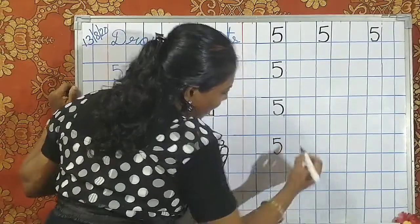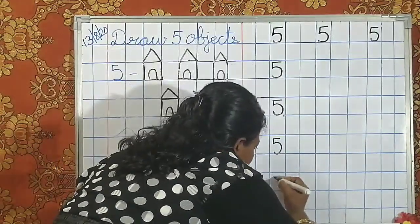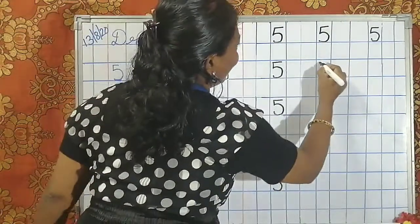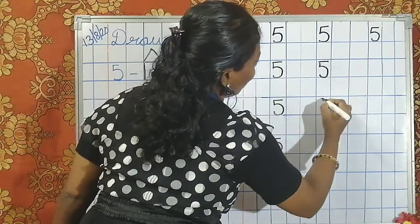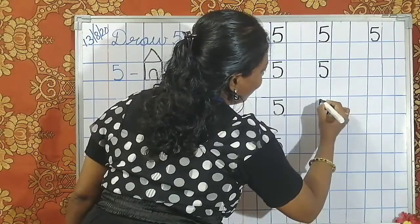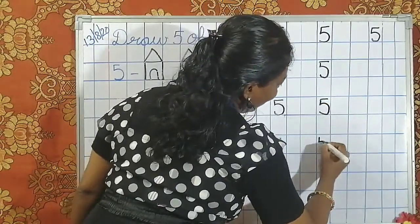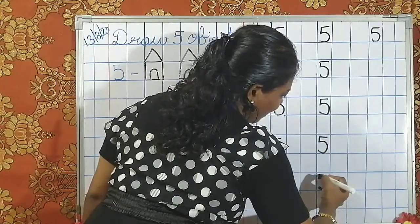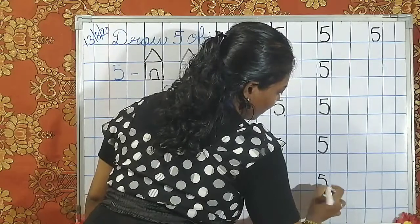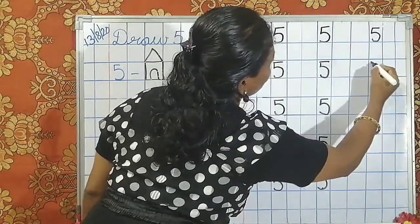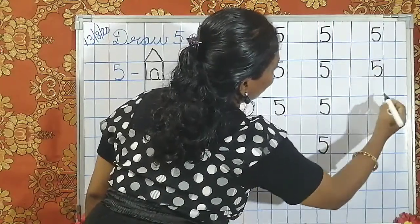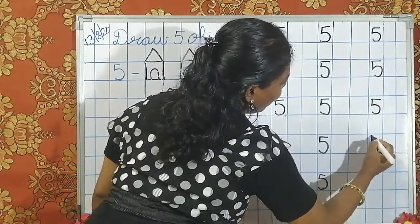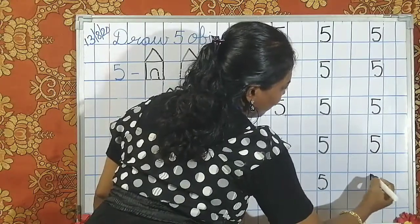Number 5. How do we write, children? Say, children: small standing line, curve, small sleeping line. Number 5. Say children, number 5. Small standing line, a curve, and number 5. Number 5. Number 5.